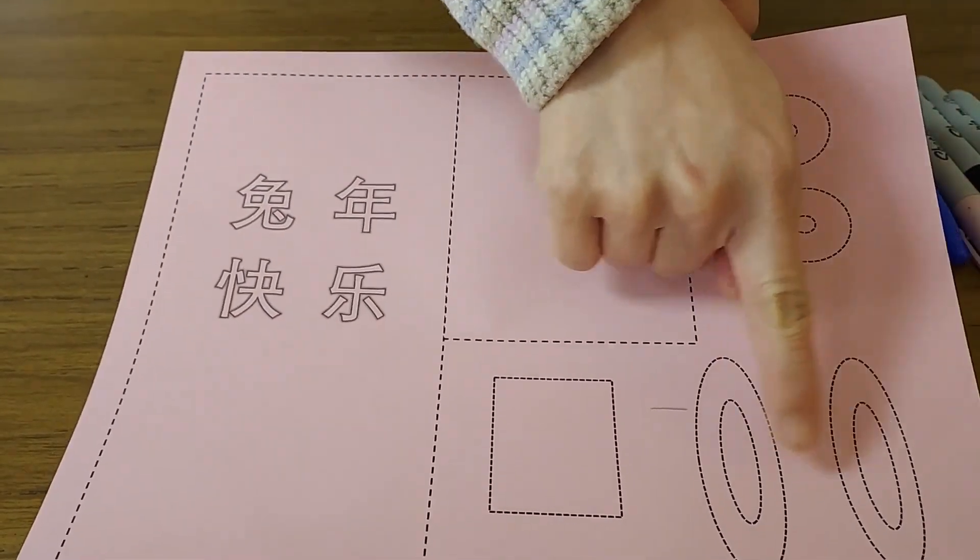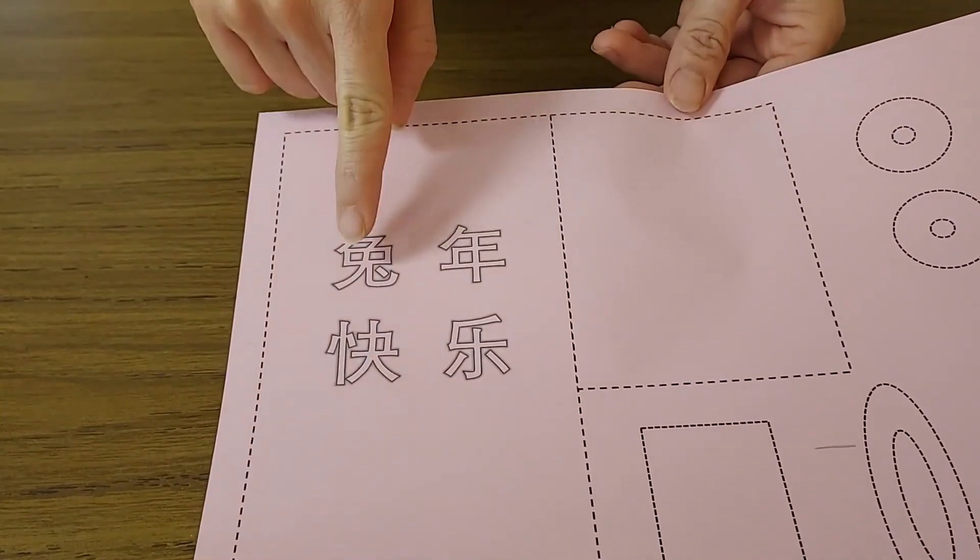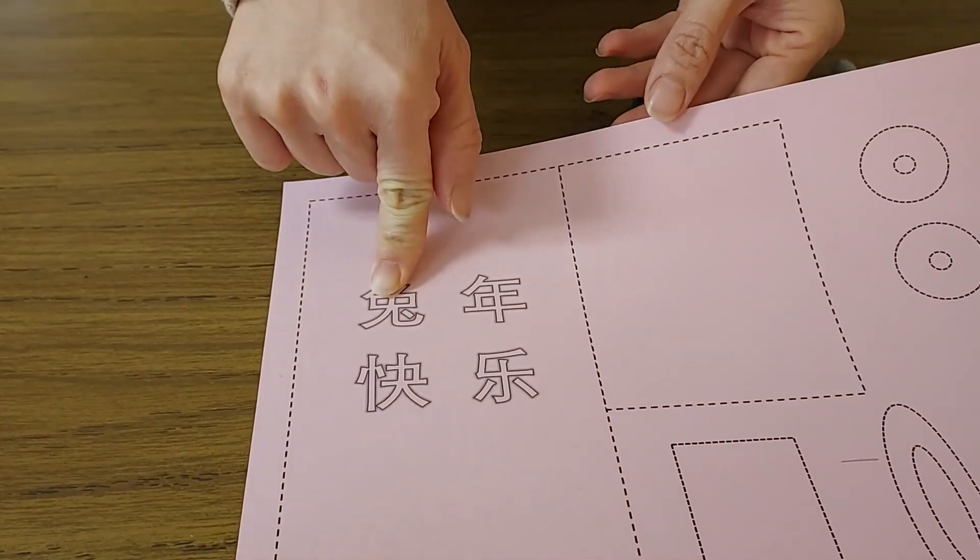you want to color the rabbit's ear, the rabbit's eyes, and the character of Happy is the year of the rabbit.